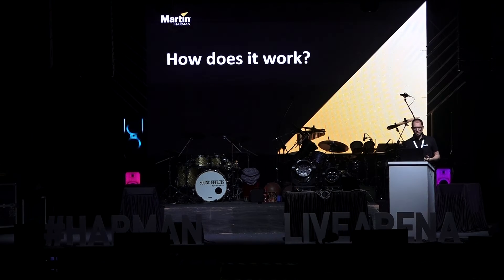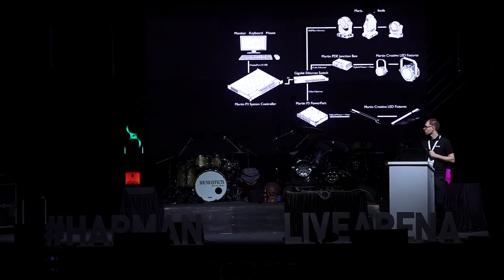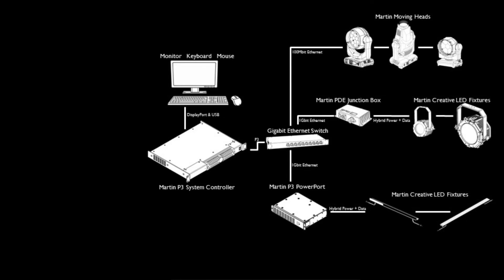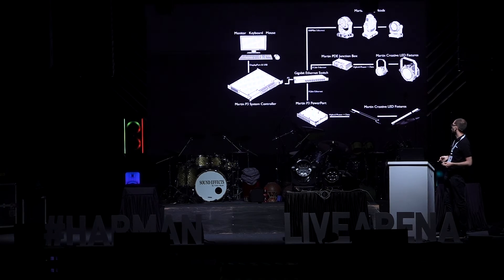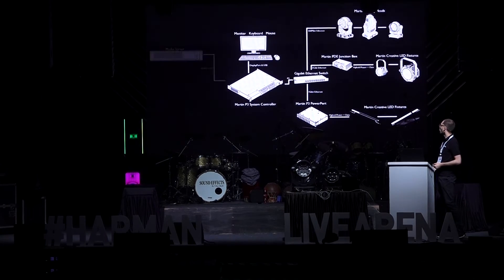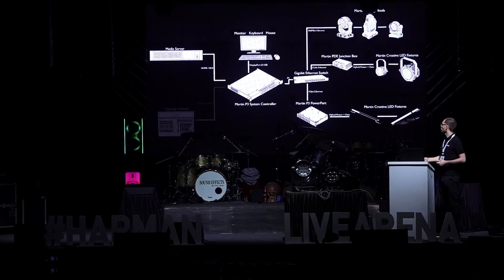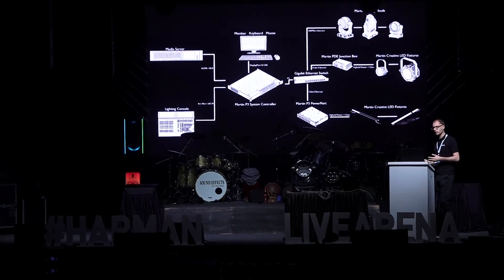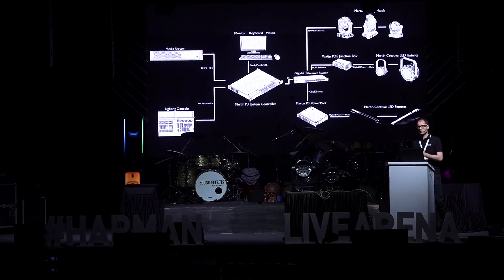So how does P3 work? How does it go together? A quick system diagram. The P3 controller is in the middle — you just connect keyboard, monitor, and mouse. Between the P3 and all the fixtures, it's all network-based, with standard network cables. For control, you either connect a lighting desk or a media server as input to the P3, or both at the same time. That both-at-the-same-time solution is really cool because then for some parts of the show you can use video and for other parts you can do it from the console.